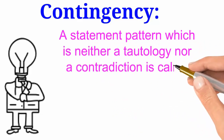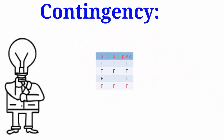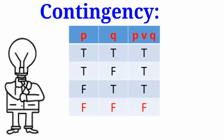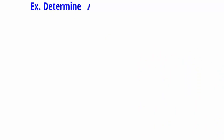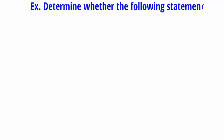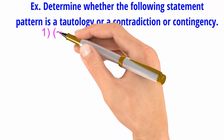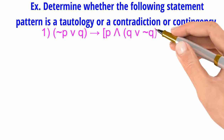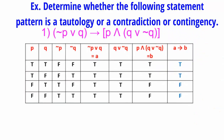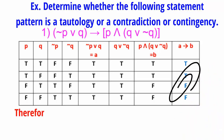For example, consider p or q. We shall see the truth table of p or q to determine whether it is a tautology, a contradiction, or a contingency. Also, consider negation of p or q implies p and q or negation of q. From the truth table, we observe that the last column is neither all T nor all F.